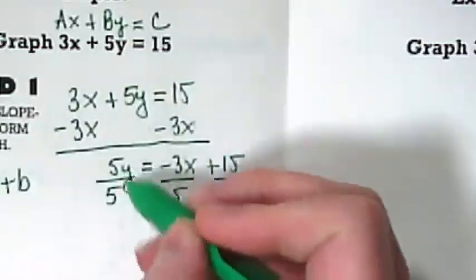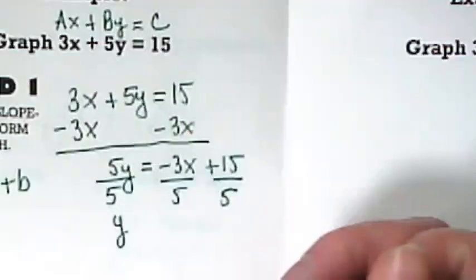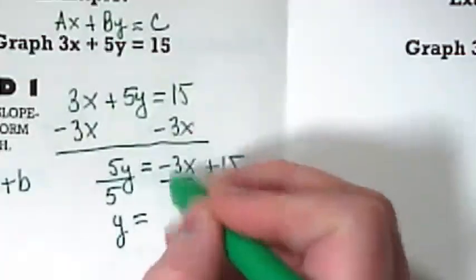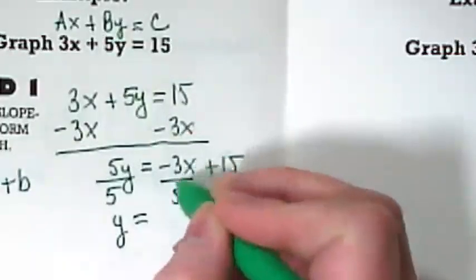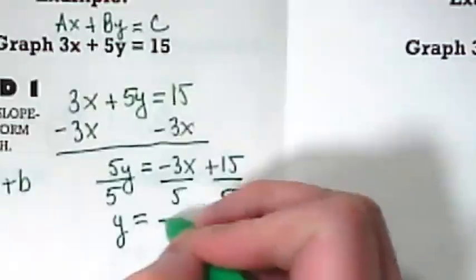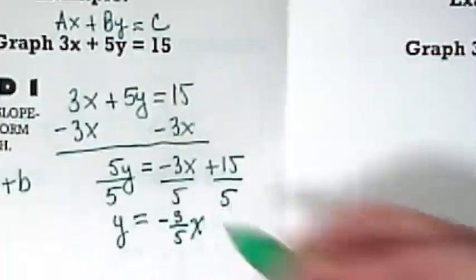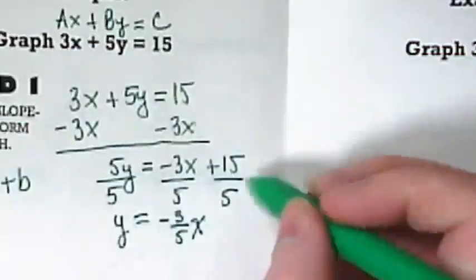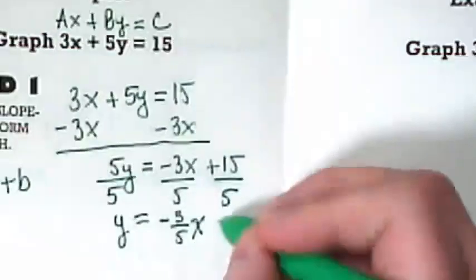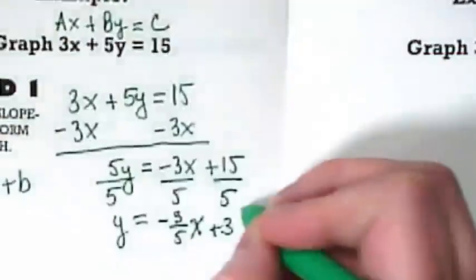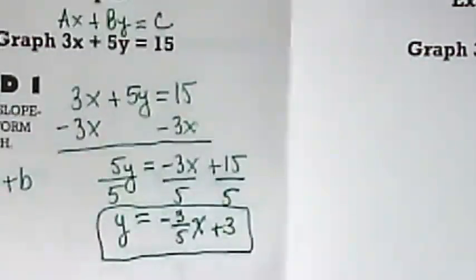5 over 5, is that giving me my invisible 1? That means I've just solved for y, because y is by itself. What's in the place in front of the x? It's the slope, right? What's our slope here? Negative 3 over 5 times x. And what happens with the 15? It's divided by 5 and becomes 3. So that's my equation.